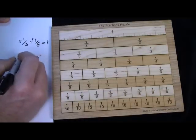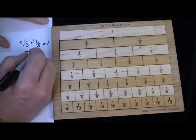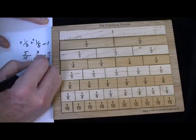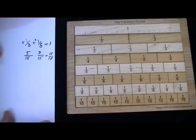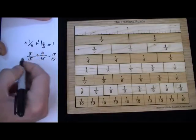So, 1 third would be 5 fifteenths. 1 fifth would be 3 fifteenths. And we're trying to make it equal 15 fifteenths. Is there any way to do that? And just, you know, in your math in your head, let's see,